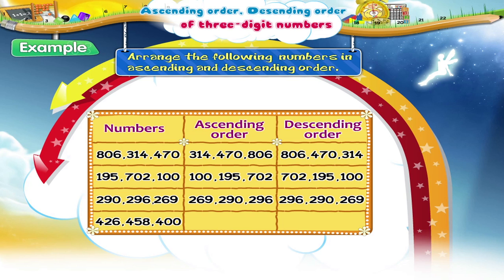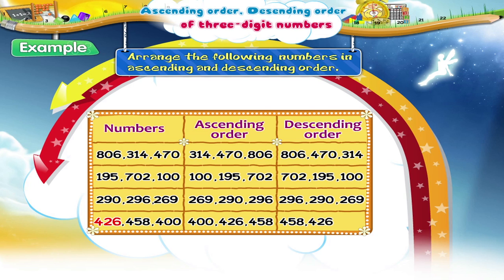For the last set of numbers, the ascending order is 400, 426, and 458. And the descending order is 458, 426, and 400.